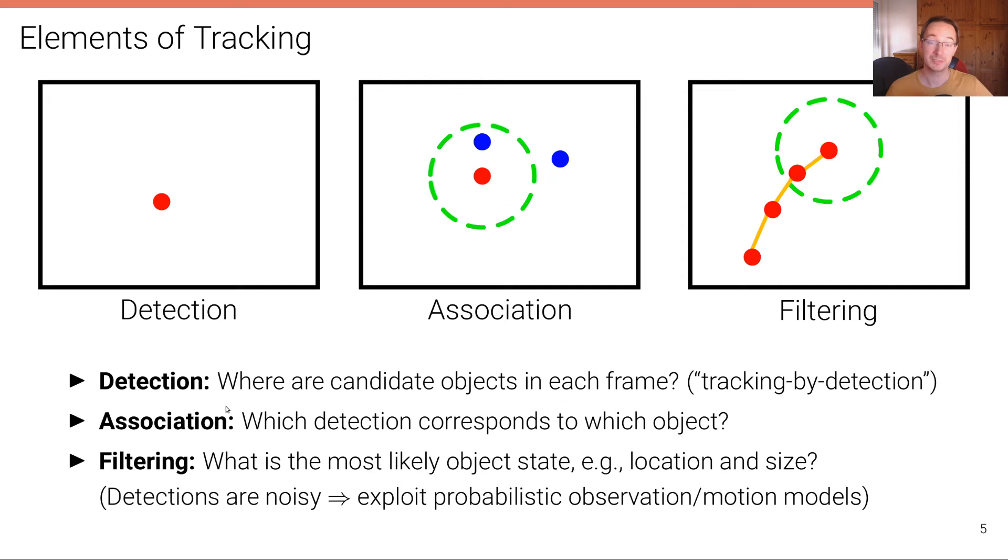The detection problem we have already discussed in the last lecture. And the question to answer here is where are candidate objects in each frame. Now different from before, we are not going to consider a single image, but we consider a video or 3D point cloud sequence that's recorded from the sensor. And so we run that object detector on each frame of that sequence. If it's a video, we run that object detector on each frame of that video.